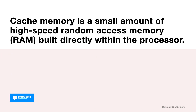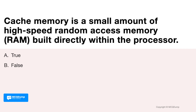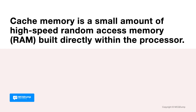Cache memory is a small amount of high-speed random access memory (RAM) built directly within the processor. True or false? It's true. Cache memory is a small amount of high-speed RAM built directly within the processor. It temporarily holds data and instructions that the processor is likely to reuse, allowing for faster processing, as the processor does not have to wait for data and instructions to be fetched from the RAM.